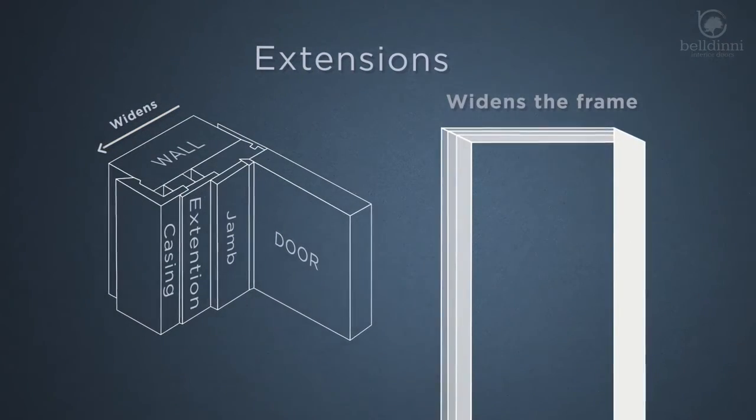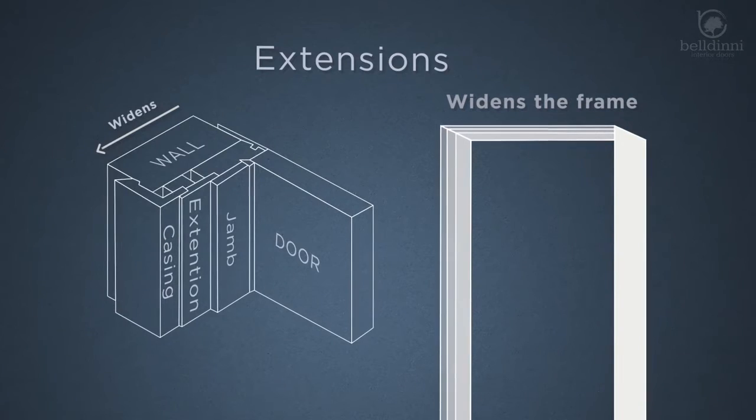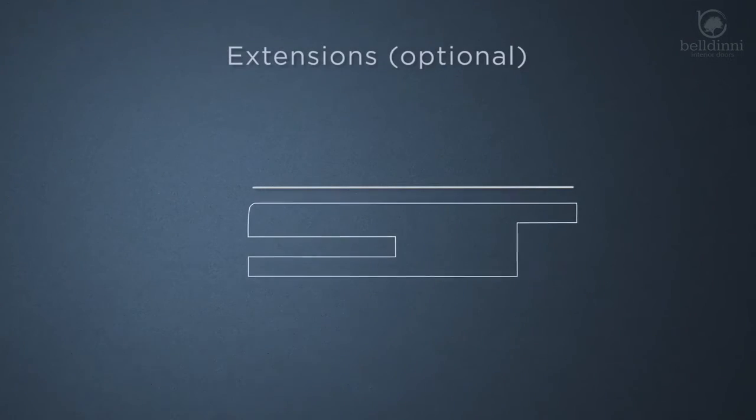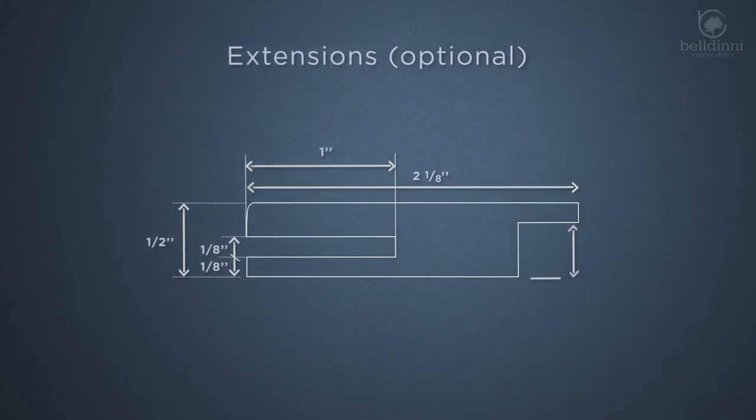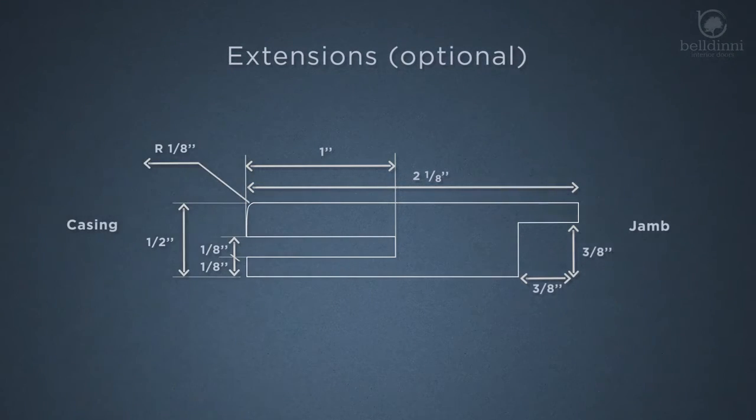So if the wall thickness is greater than the standard jamb width, extensions must be used. Beldini jamb extensions are typically made of MDF and create a clean edge for the casing trim to be nailed to or inserted if this is a telescopic L-casing.